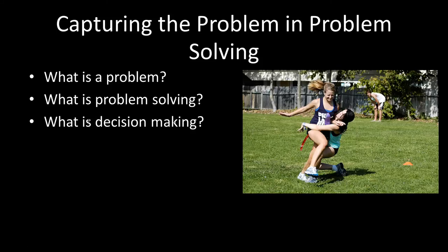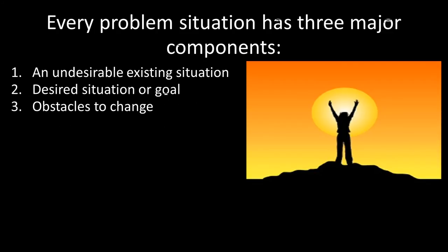What is a problem? A problem is a difference between what exists presently for a group and what you would expect or want. Problem solving is everything that you need to do to move yourself from your present undesirable situation to the situation that you want — this includes creating solutions and choosing among them. Decision making is the process by which you actually choose from the decisions available. Every problem has three major components: an undesirable existing situation, a desired situation or goal, and obstacles to change — things that get in the way of reaching that desired goal.